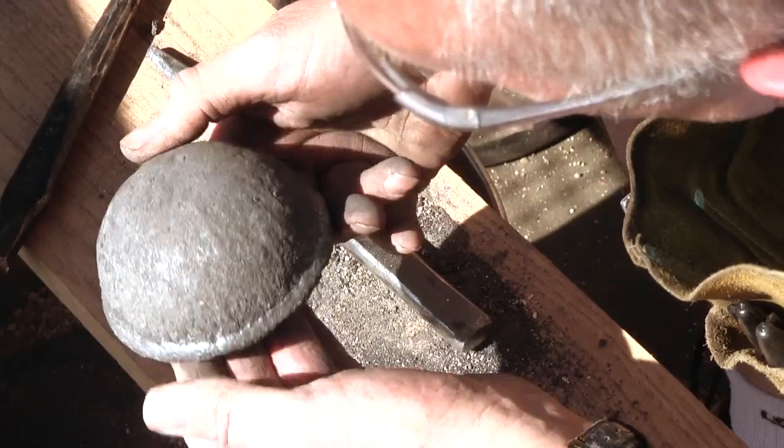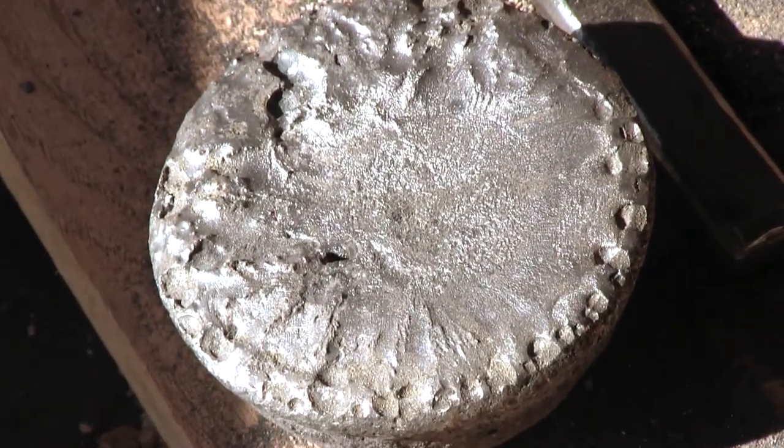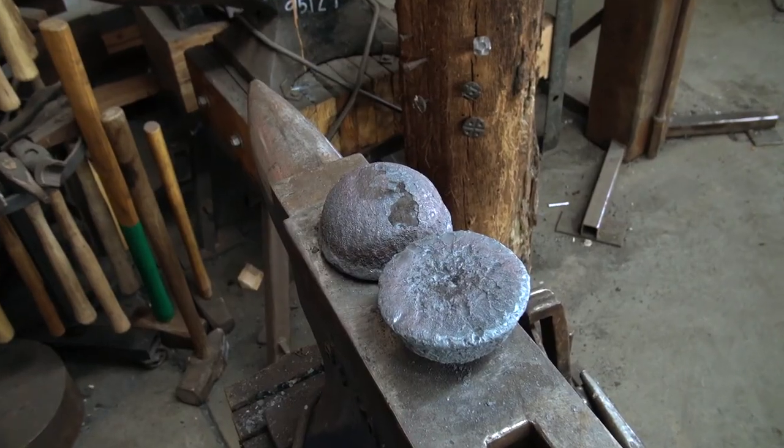Everything looks very good. Before working the ingot, we thermally cycle it to about 2000 Fahrenheit and let it cool down very slowly.